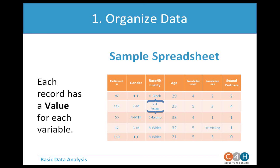We never want to leave a blank cell — each cell needs a value. In this case, participant number 12 did not mark a response for their self-rated knowledge about HIV/AIDS prior to the workshop, so we've added '99 missing' in that cell. This indicates the person did not respond, so we know something isn't simply missing — we know it actually wasn't there to begin with.